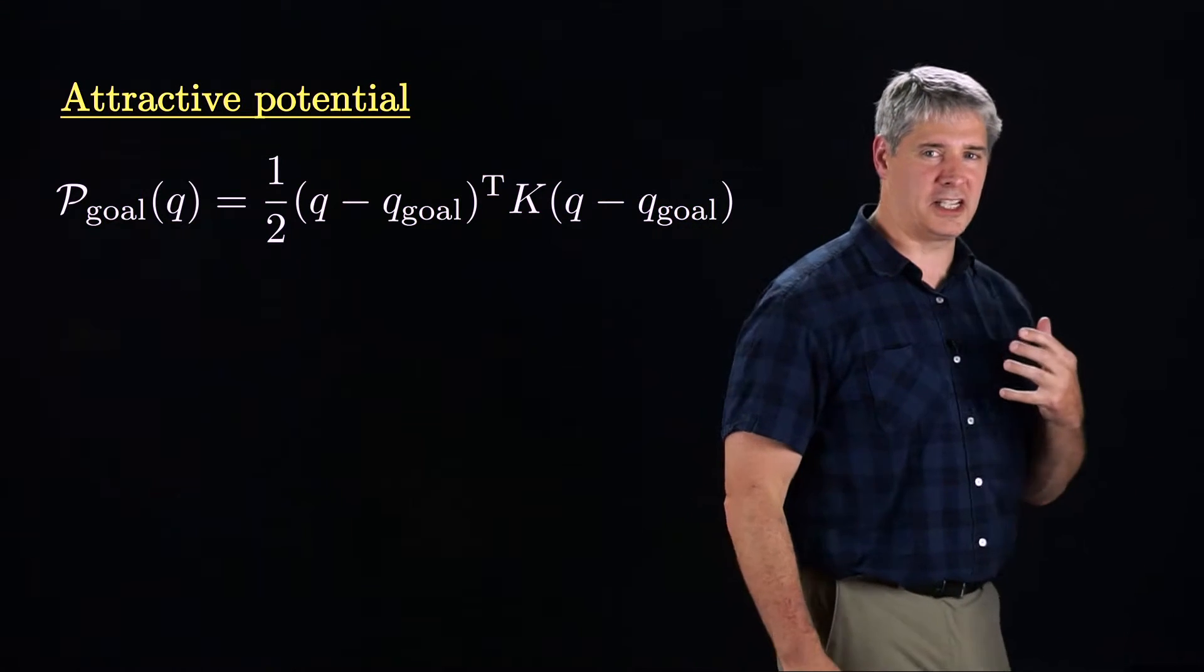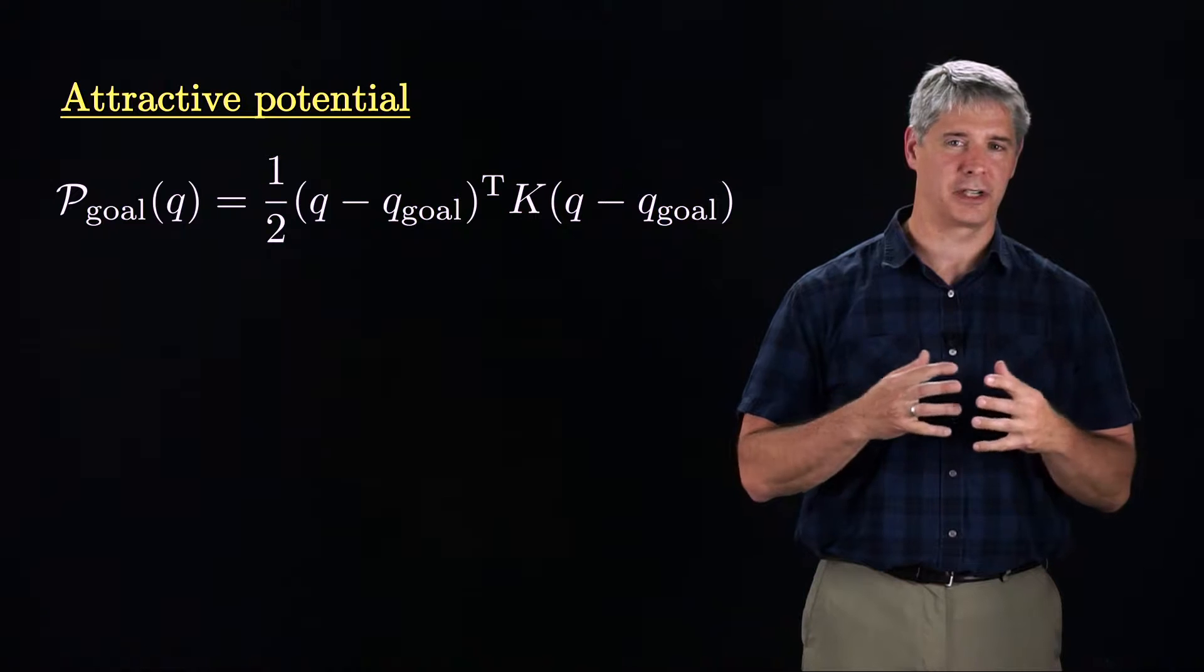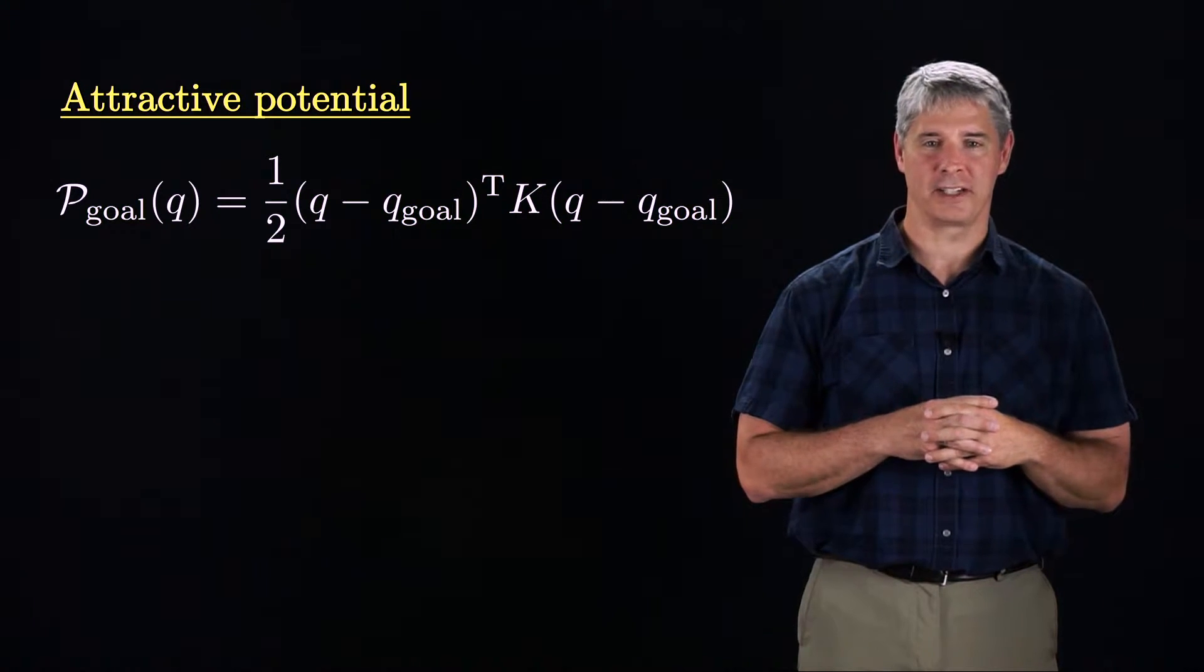An attractive potential field on the C-space can be described by this quadratic in the difference between the actual configuration and the goal configuration, where the K-matrix is positive definite.